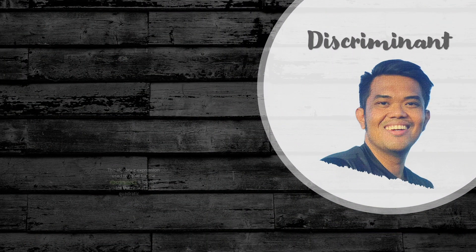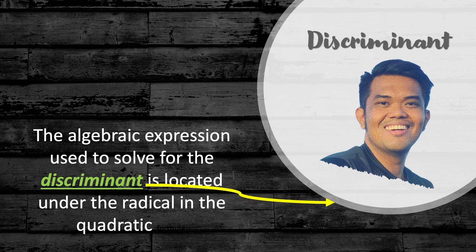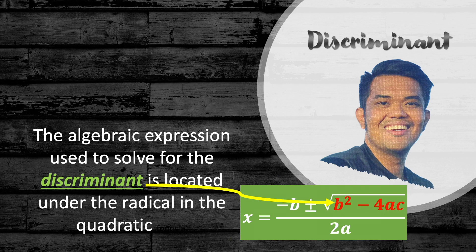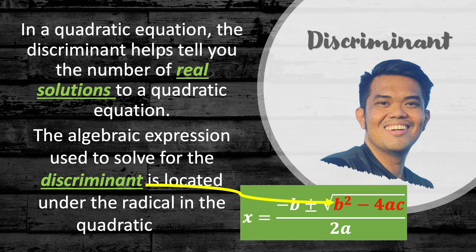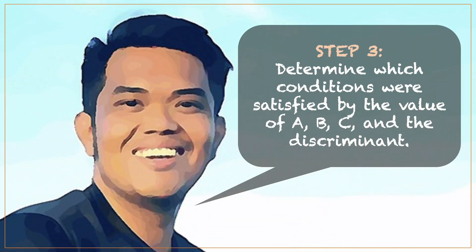The algebraic expression used to solve for the discriminant is located under the radical in the quadratic formula. Aside from the fact that it is used to determine the type of a conic section, did you know that a discriminant is also computed to know the number of real solutions to a quadratic equation? The number of real solutions depend on whether the computed discriminant is positive, negative, or zero. In step number three, we will interpret our computed discriminant. In our interpretation, we will see which among the conditions set by each conic section are satisfied by the computed discriminant. The coefficients A, B, and C are included in our interpretation and making our conclusion.